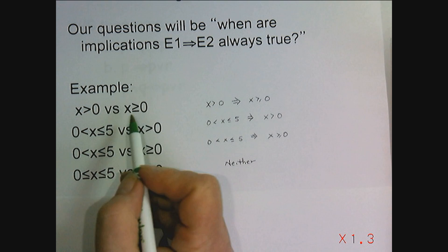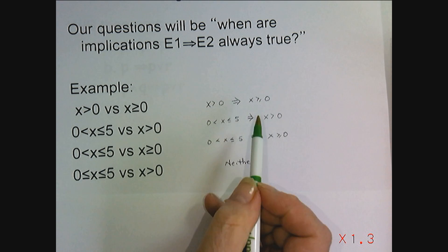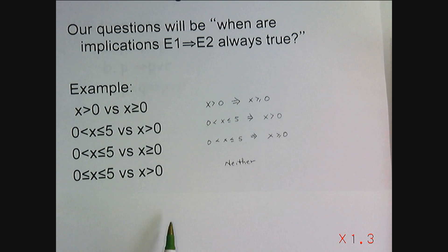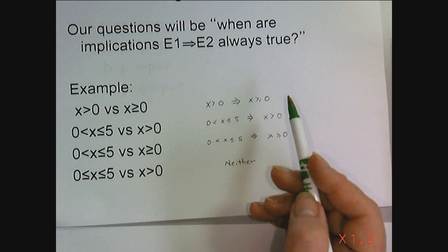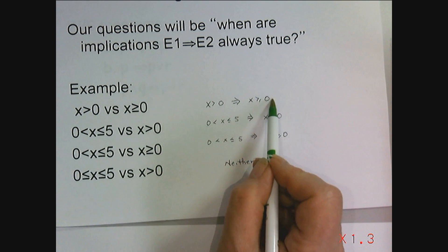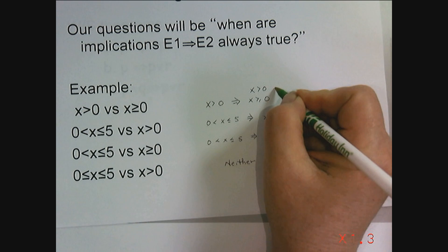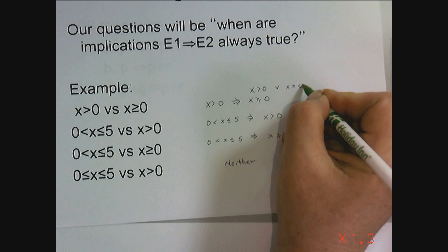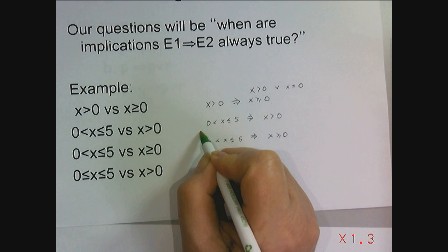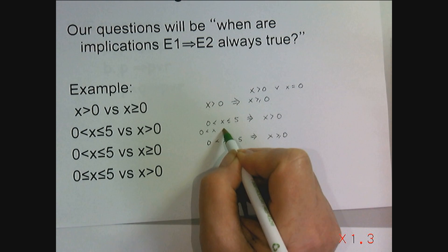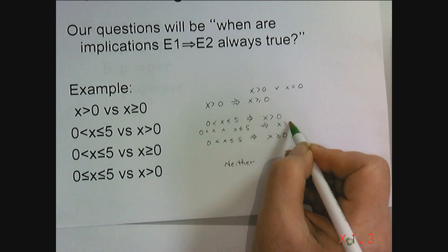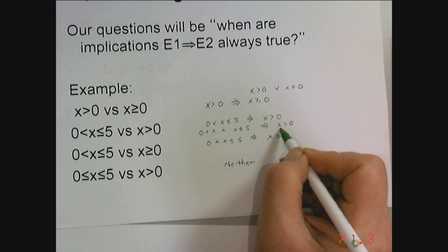Often what we're going to want to do is, just by looking at some expressions, be able to tell which one is stronger and which one is weaker. That's why we call it weakening and strengthening. Notice that x greater than or equal to zero can be written as x greater than zero OR x equals zero. And zero less than x less than or equal to five implies x greater than zero, since zero being less than x is the same as x being greater than zero.